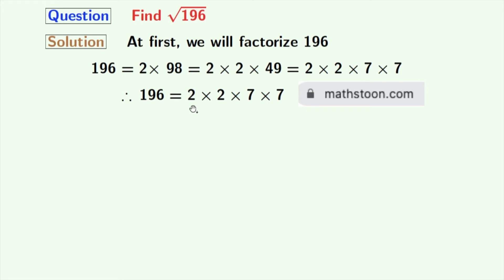Now we will take the square root on both sides. Doing that, we get √196 = √(2 × 2 × 7 × 7).